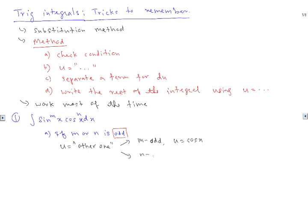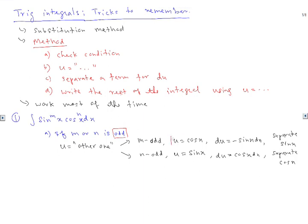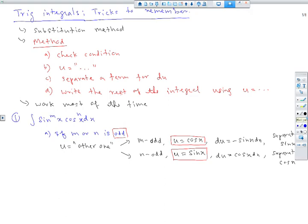If n is odd, we pick u = sin x. Then du = −sin x dx in the first case, and du = cos x dx in the second case. We separate a sine term or cosine term for the derivative, then write the rest of the integral using u. The easy way to remember: use the other one.